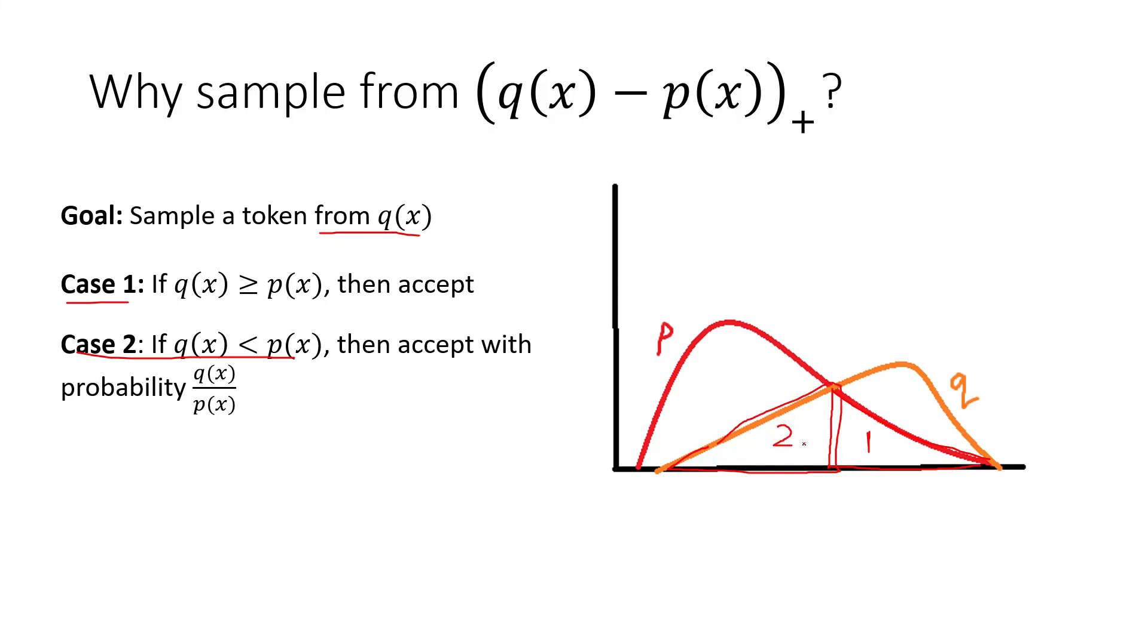The only part that's missing now is when q is less than p, and we have decided to reject. So in this case, we want to cover the part of the q distribution that has not already been covered. This part here is at the top right. So that's why when we reject in case two, we sample from the distribution q minus p.